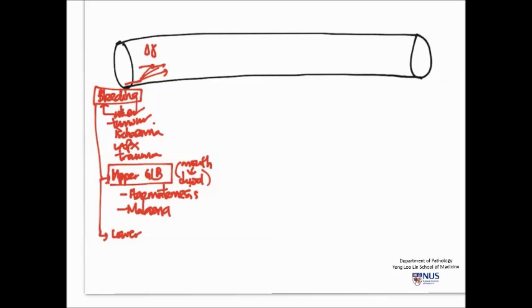Now the next aspect is lower GI bleeding, and lower GI bleeding is a little bit different. The patients can present with bloody diarrhea or blood in the stools, and this is also known as hematochezia.